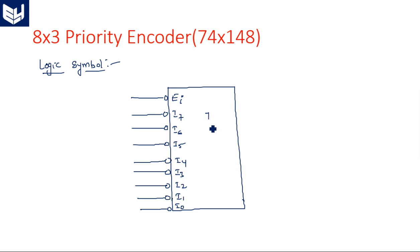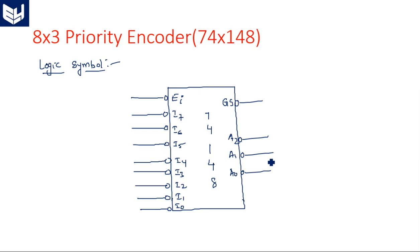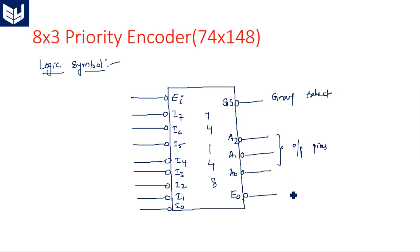This is the 74148. On the output side, GS (which is active-low), A2, A1, and A0 are the three output pins, also active-low. EO is the output enable pin. GS stands for group select. So we have: group select, output enable pin, input enable pin, and the eight input pins.